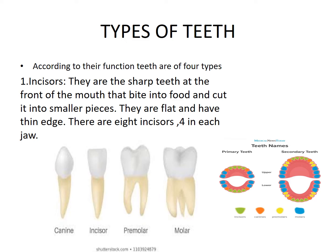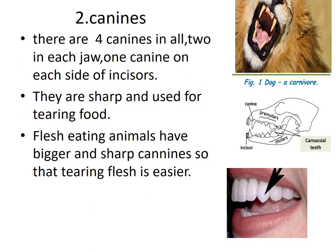Now coming to canines. There are four canines in all — two in each jaw. They are sharp and used for tearing food. As you can see, they are sharp, which is why flesh-eating animals have bigger and sharper canines.